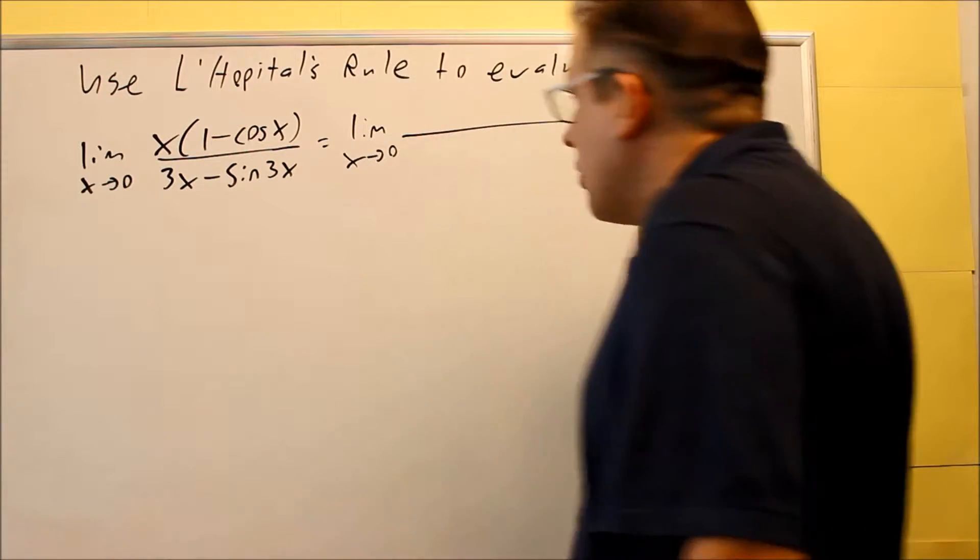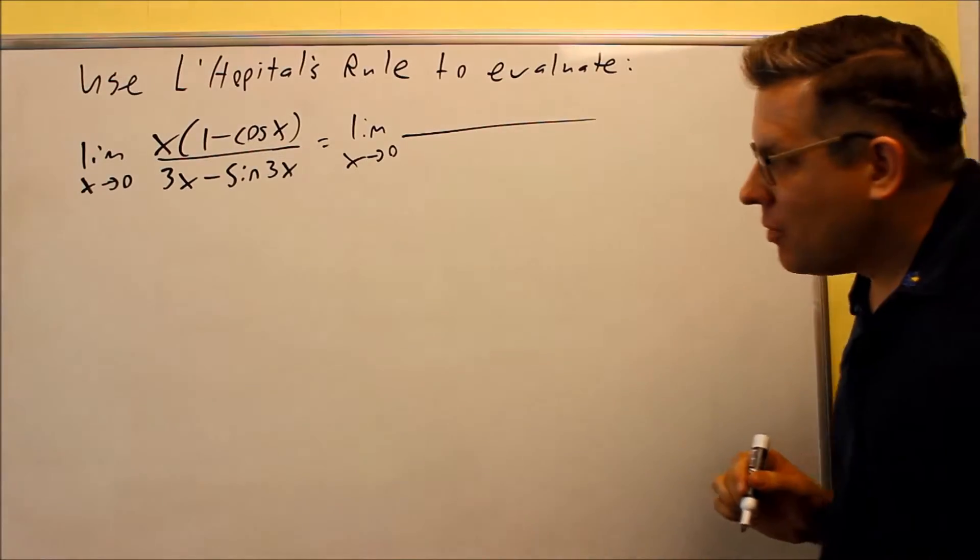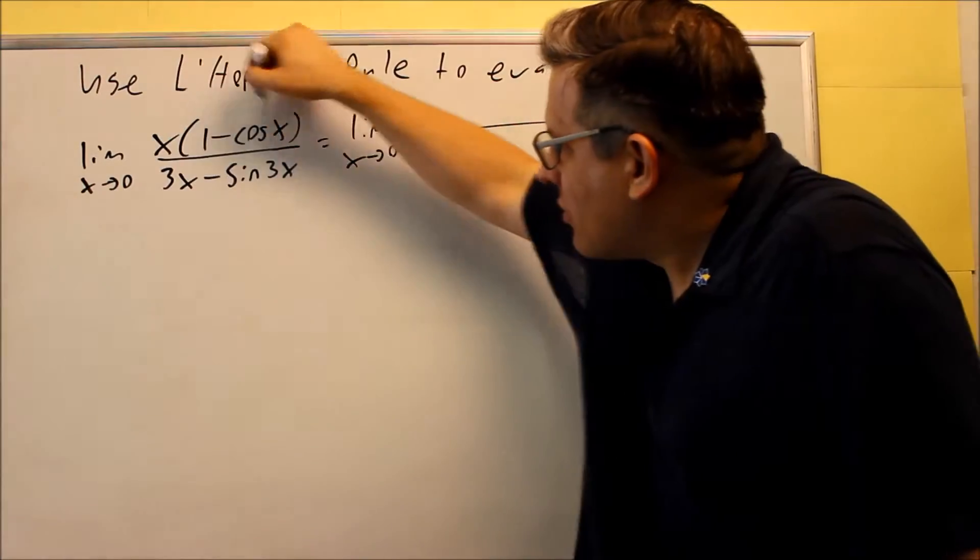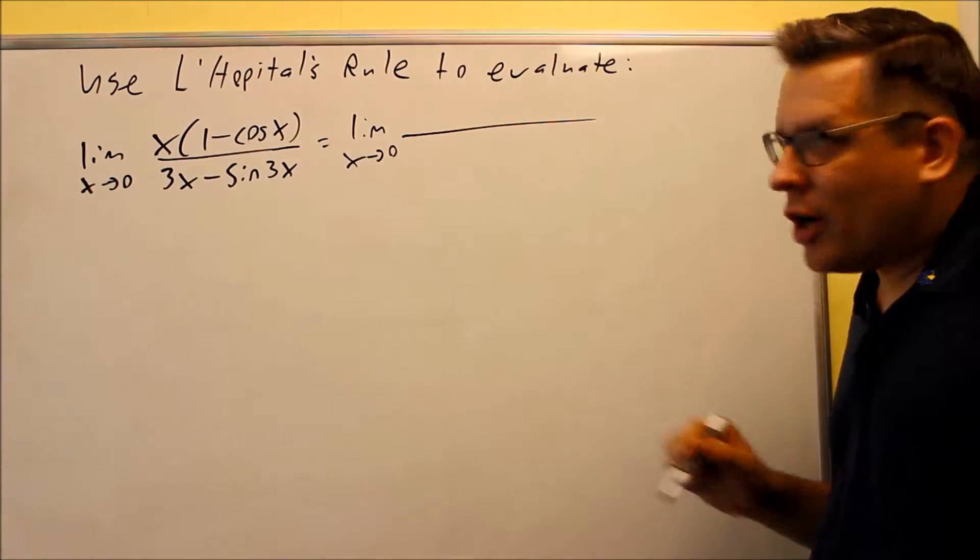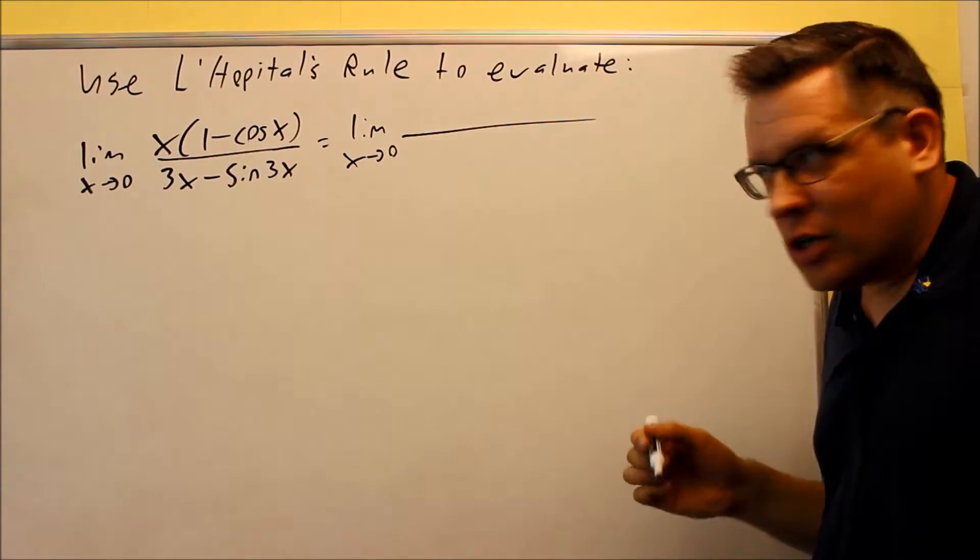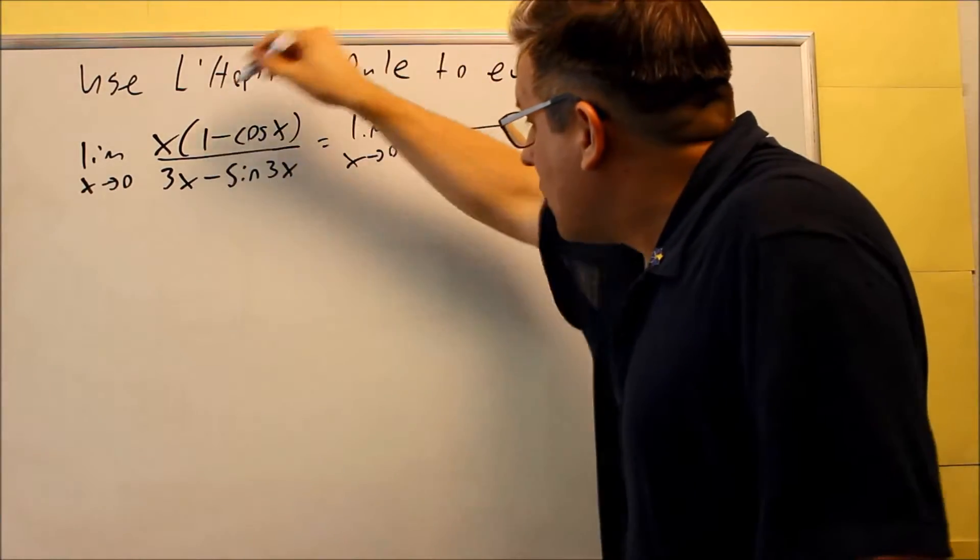So, the first thing we're going to do is take the derivative of the top and the bottom. Top part's going to require a product rule. Now, you could multiply the x out as well, but no matter what, you're still going to end up with an x cosine, so you have to use the product rule anyway. So, we might as well just go ahead and start by doing that.